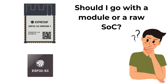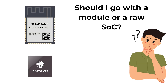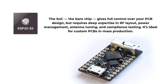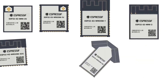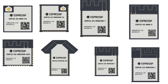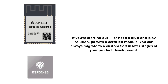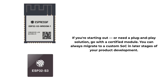SoC or module? A common question is: should I use a raw SoC or a ready-to-use module? The SoC, the bare chip, gives full control over your PCB design but requires deep expertise in RF layout, power management, antenna tuning and compliance testing. It's ideal for custom PCBs in mass production. Modules, on the other hand, simplify the process — they come with RF certification, flash memory and antennas built-in. Espressif has many modules ready to use. If you are starting out or need a plug-and-play solution, go with a certified module. You can always migrate to a custom SoC at a later stage of your product development.